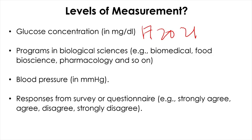Moving on to the next variable: programs in biological sciences — for example, biomedical science, food bioscience, pharmacology, and so on. The values you can assign to this variable are the subcategories or names. You cannot perform any mathematical operations between these values, and you cannot even rank order between these different programs. There is no better or worse program, so programs in biological sciences is a nominal level of measurement.